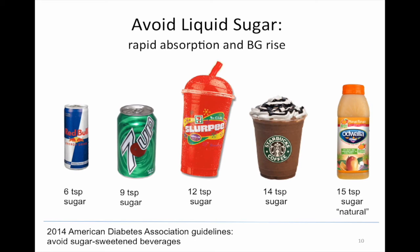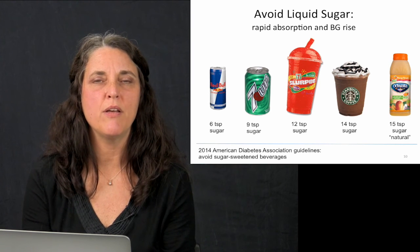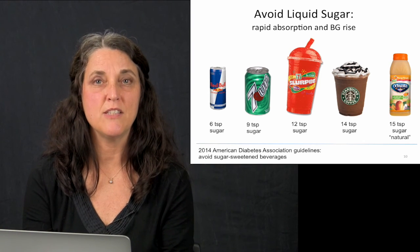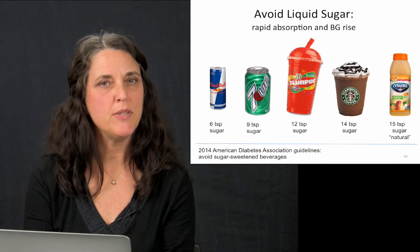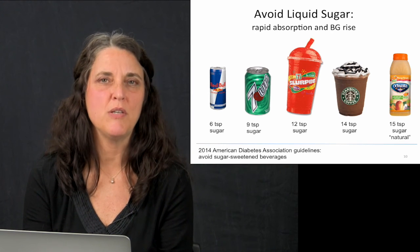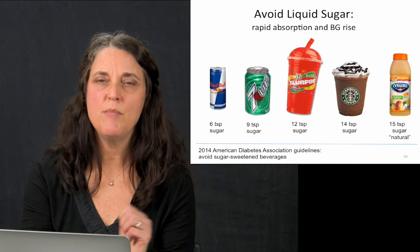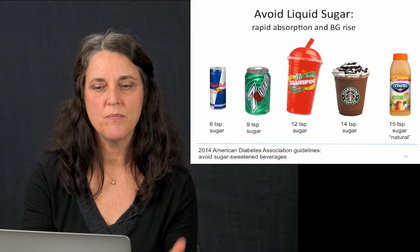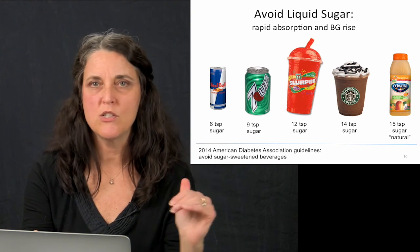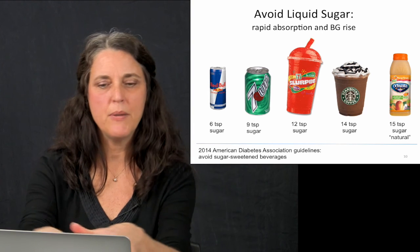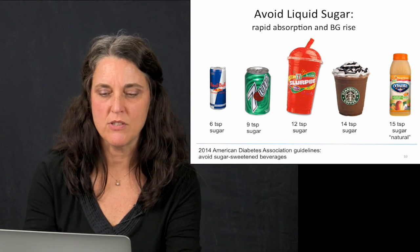So in 2014, the American Diabetes Association came out with a pretty firm stance on this. And they say people with diabetes should avoid sugar sweetened beverages. And there may be a time and a place, such as treating low blood sugar. They do raise your blood sugar quickly. So when you're low, they're good choices, but never these portions. You only need about four to six ounces.